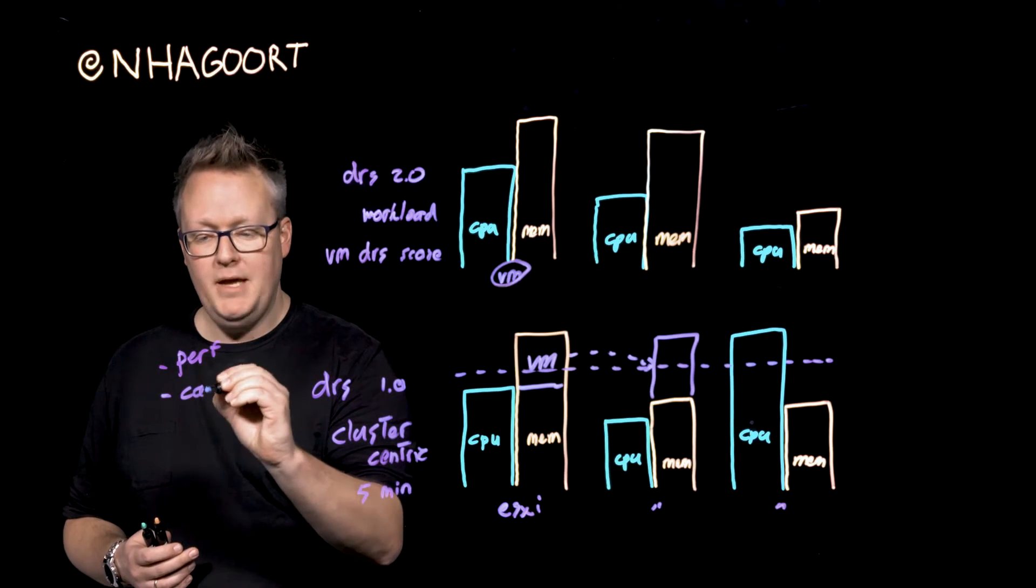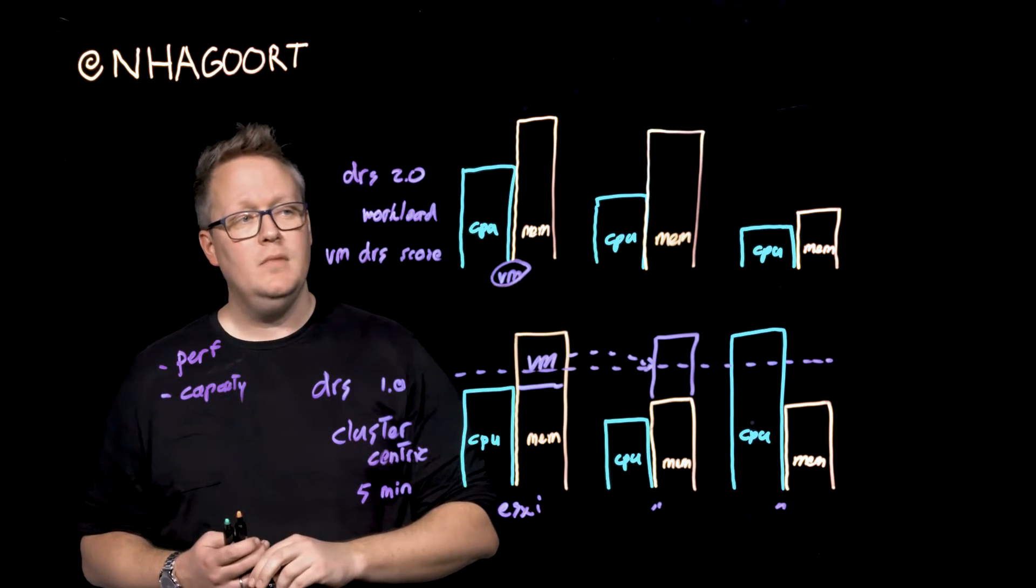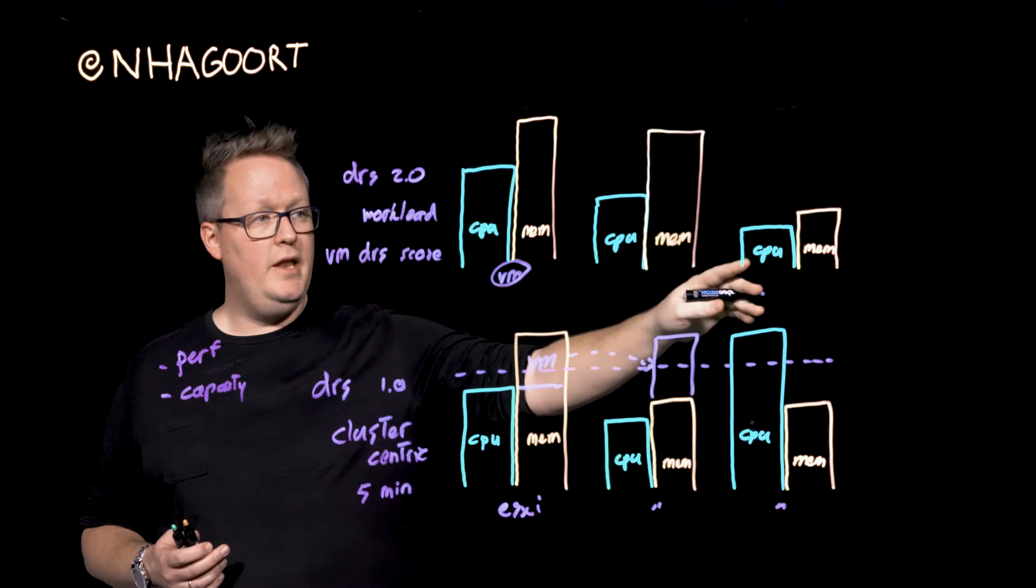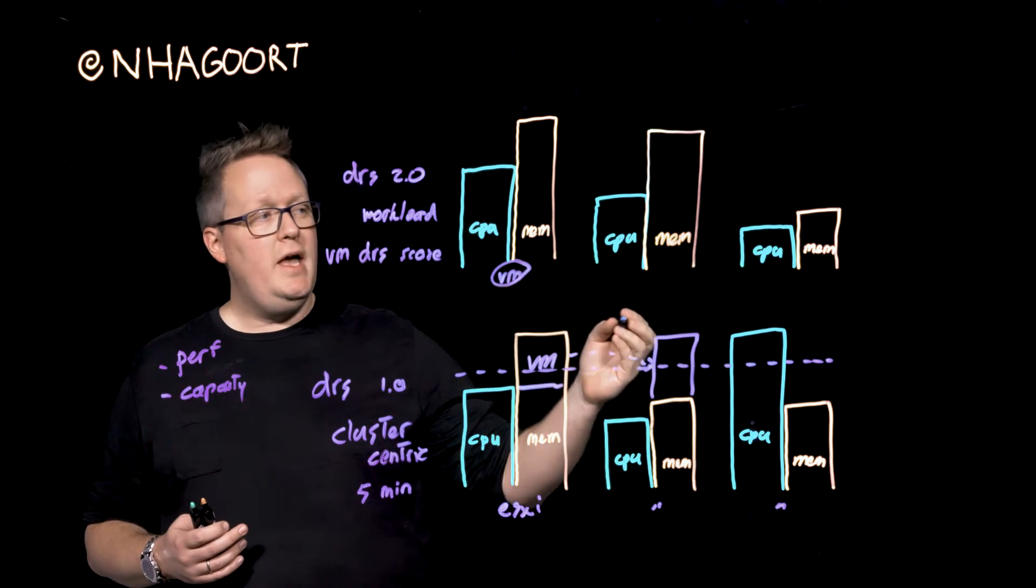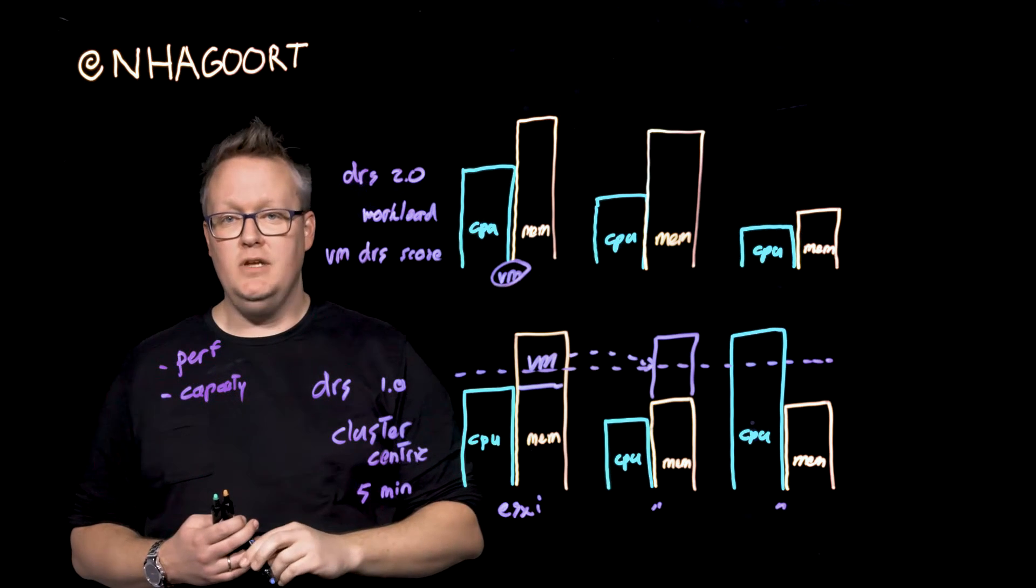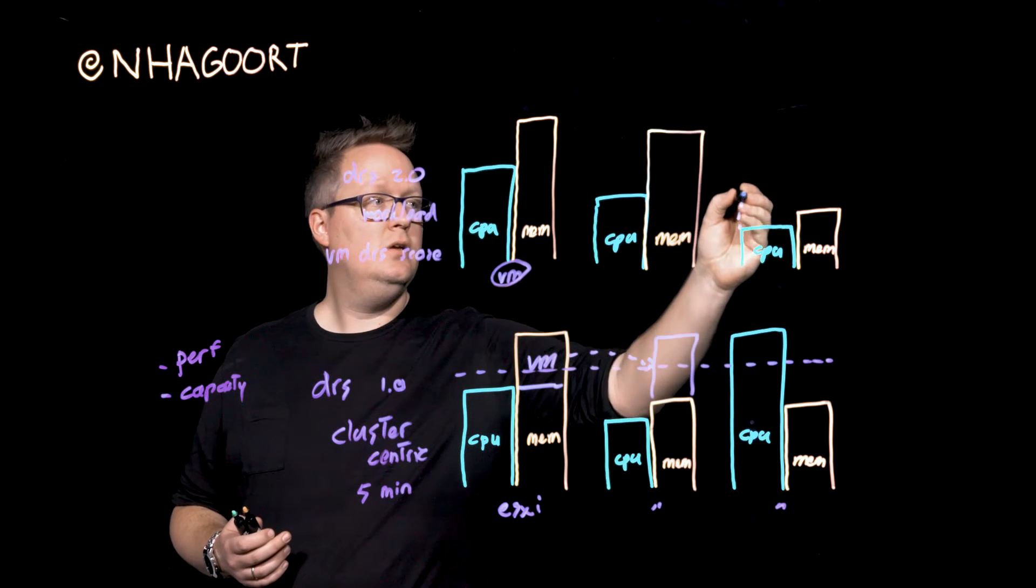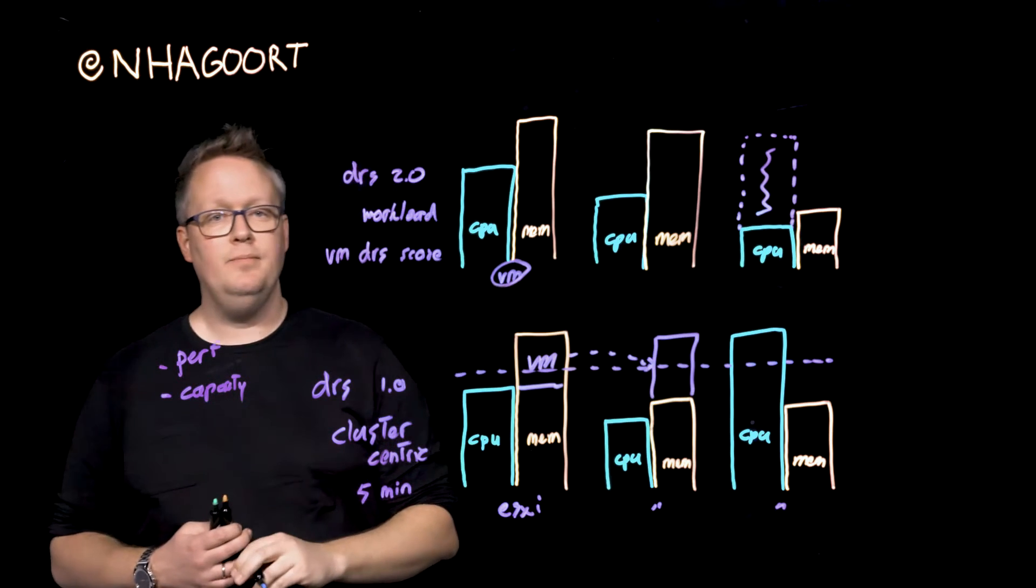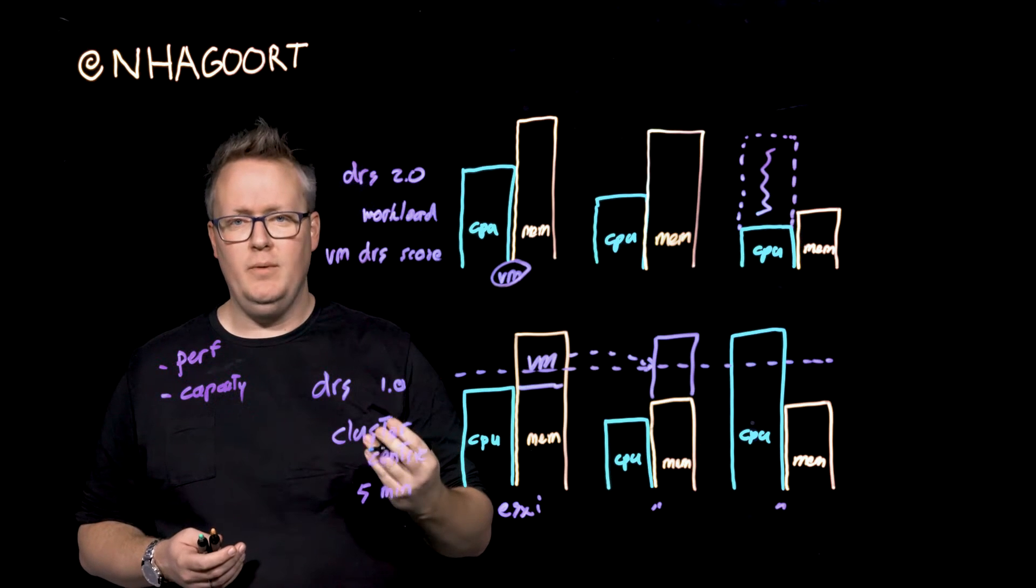It's about the capacity of the ESXi hosts themselves. Meaning that if we look at all the ESXi hosts in the cluster, we look at the headroom that a specific ESXi host has. So, for instance, this ESXi host here has a lot of headroom.